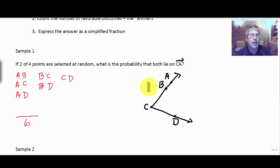And the number of winners. Our winners here, they have to both lie on C, A. Well, A, B lies on C, A. A, C, A, D does not. B, C does, B, D doesn't, and C, D doesn't. So our winners are highlighted. That's three out of six or one out of two.